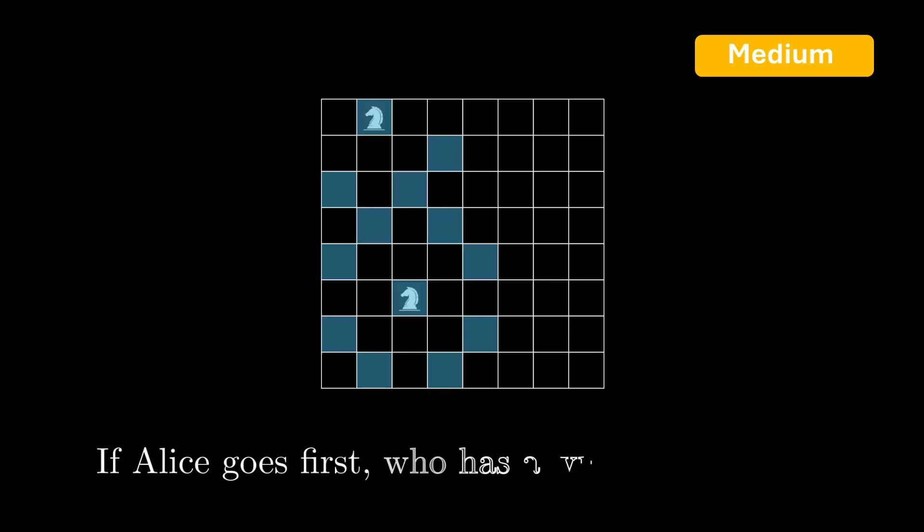Bob must then place a knight on a square where no knight has been placed, and that isn't attacked by any previously placed knight. So Bob cannot place a knight on any of the blue squares. Suppose Bob places a knight on this square. Then Alice must place a knight on a square where no knight has been placed and that isn't attacked by any previously placed knight, and the game continues in this manner. The player who cannot place a knight loses. So if Alice goes first, who has a winning strategy under optimal play?